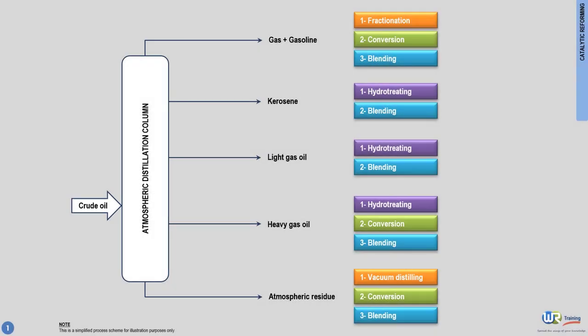In this video, we discuss the last conversion unit that uses straight-run gasoline as a feedstock. This process is called catalytic reforming.